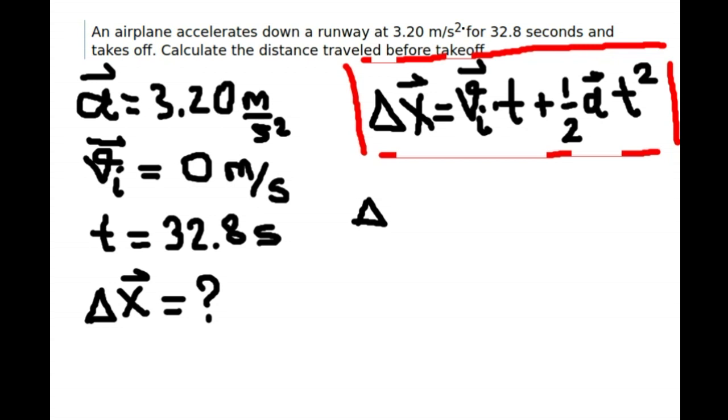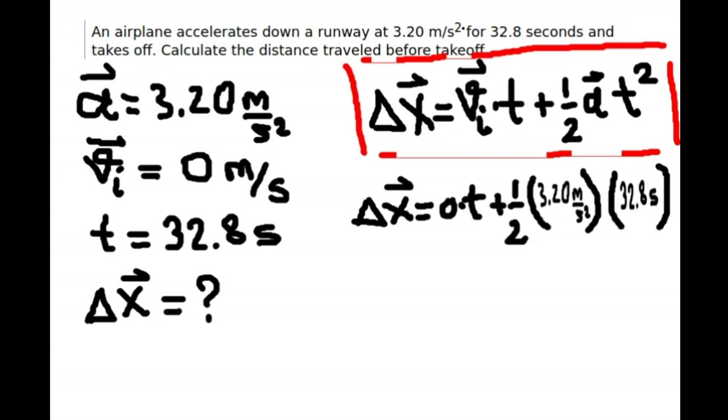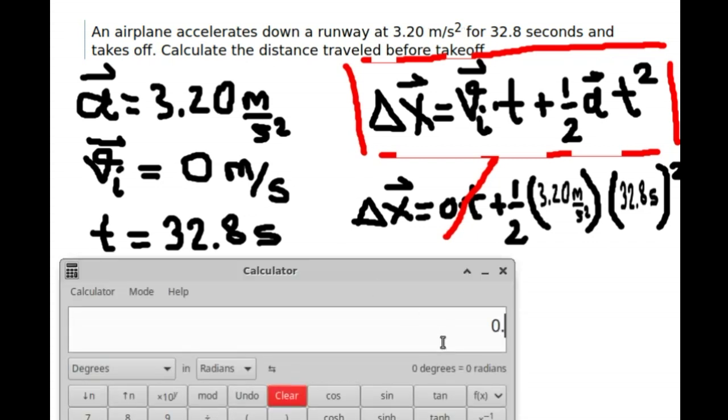Let's plug in the numbers. Delta x equals 0 times t plus one half acceleration is 3.20 m per second squared times 32.8 seconds squared. Now we need a calculator here. Let's grab a calculator. 0.5 times 3.20, times 32.8 squared.